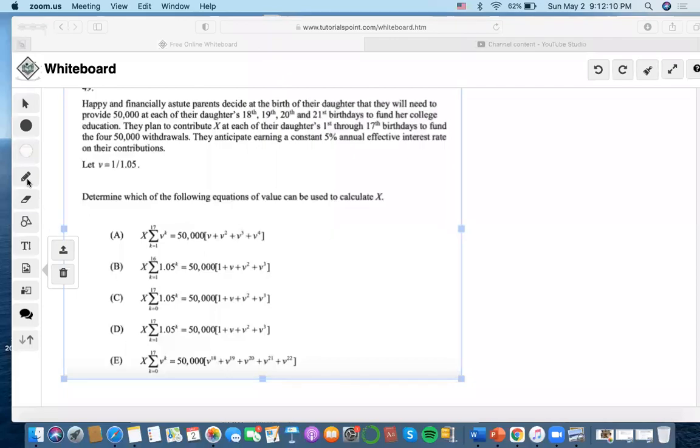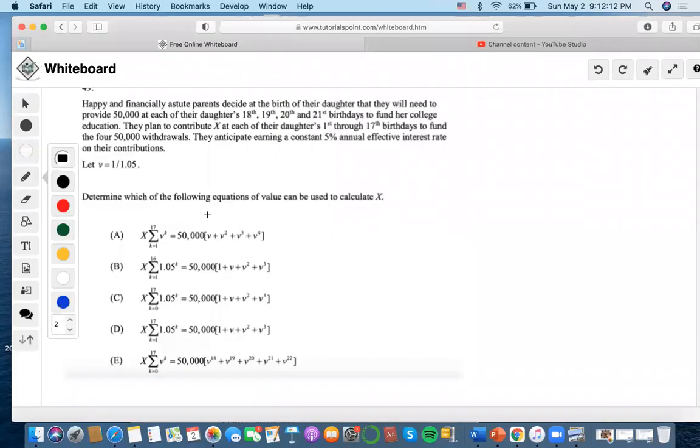Hi. Okay, so basically for this one, these parents want to provide $50,000 at each of their daughter's 18th, 19th, 20th, and 21st birthdays. They plan to contribute X at each of their daughter's 1 through 17th birthdays to fund the $50,000 withdrawals. They anticipate earning a 5% annual effective interest rate on their contributions.